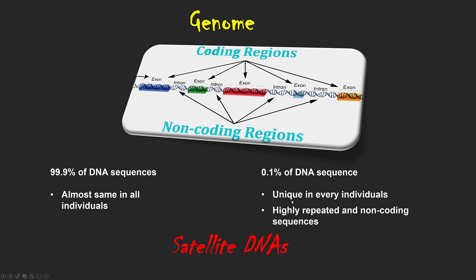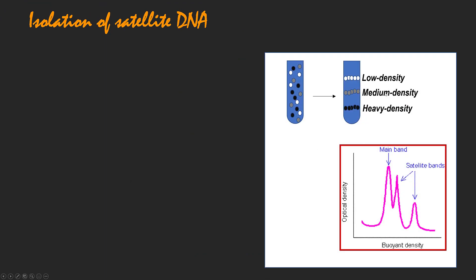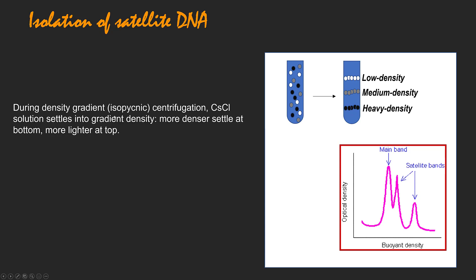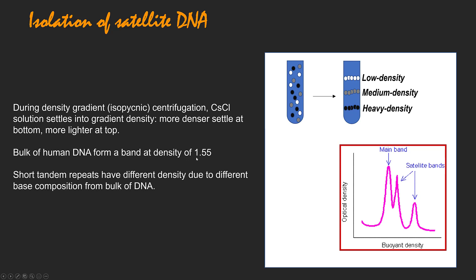Let's see how we isolate satellite DNA from the genome. In density gradient centrifugation, substances separate on the basis of density in cesium chloride solution. More dense molecules settle at the bottom while lighter molecules settle at the top. If we put the complete genome in cesium chloride solution and centrifuge it at 50,000 g, the major bulk of DNA forms a band at a density of 1.55, while some short repeats form a band at a different density because those repeats contain a different base composition from the bulk of DNA.